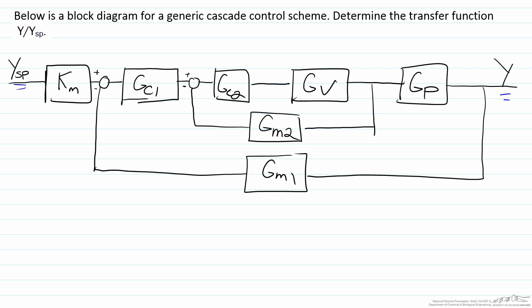Just to go through some of the nomenclature here, Gm1 and Gc1 would correspond to the primary controller and the transmitter that is reading the primary variable. Gm2 and Gc2 would represent the secondary variable, where the secondary variable and the secondary control loop responds much faster than the primary control loop.